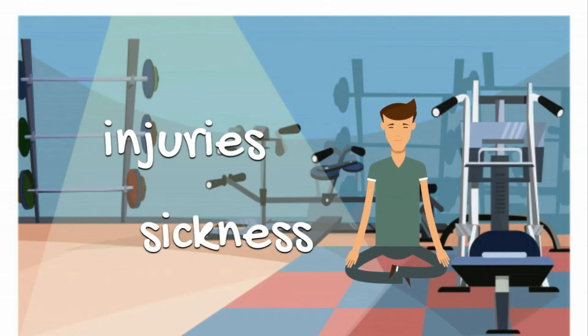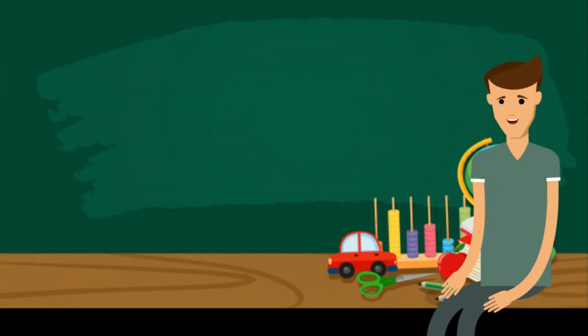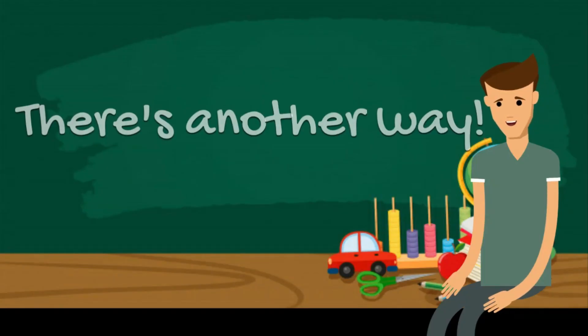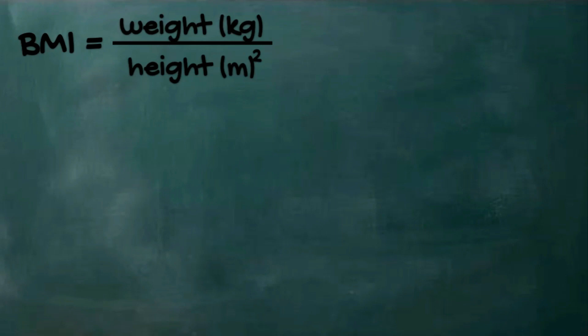Computing BMI has another way, as some people tend to get their height in centimeter scale. Let's take this formula: BMI is equal to weight in kilogram divided by height in meter squared.